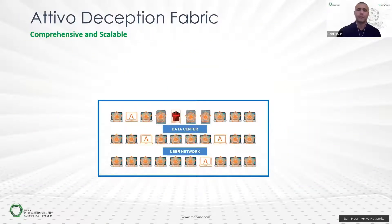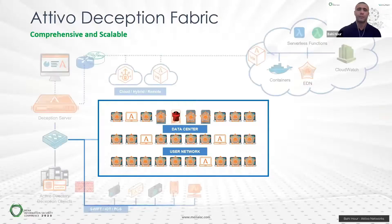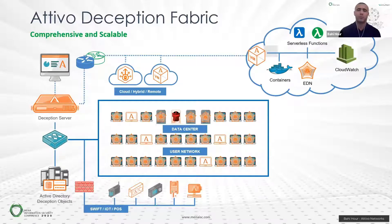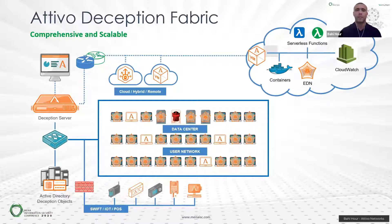Let's have a high-level view of the Attivo deception fabric. As a general idea, deception is placing and deploying traps — computer systems that are servers, workstations, IoT devices, Active Directory, containers, functions, web applications, and so on. But these are fake systems, deployed by the security team or SOC team to detect adversaries and attack activities within the network by actually engaging and experiencing that attack. It also provides great visibility on what's really happening inside each VLAN within the environment.